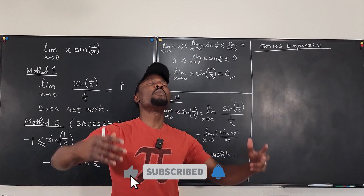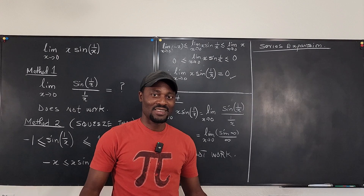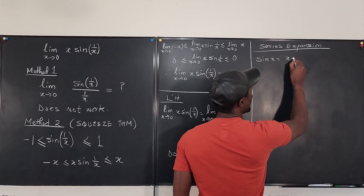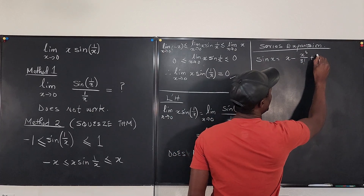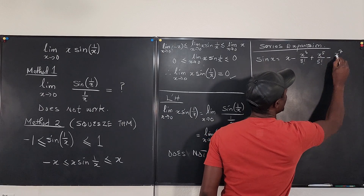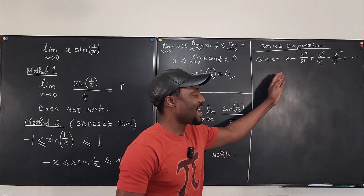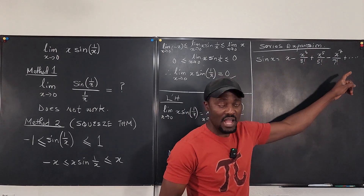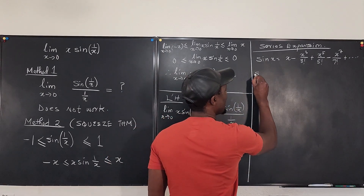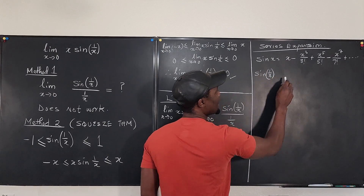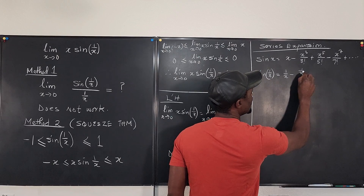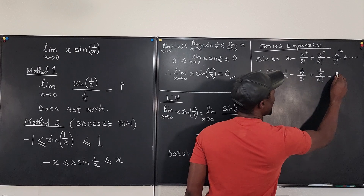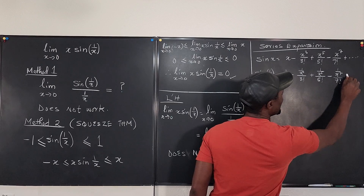For series expansion, it almost always saves you from all troubles. The series expansion for sine x is: x minus x cubed over 3 factorial plus x to the fifth over 5 factorial minus x to the seventh over 7 factorial, and so on with alternating signs and odd powers. What we have is not x but 1 over x, so sine of 1 over x replaces x with 1 over x throughout.